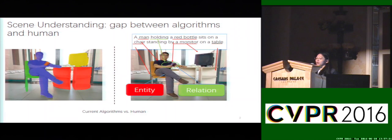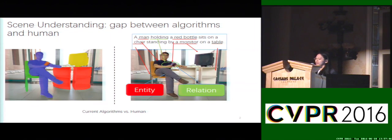First, there is a huge gap between existing computer vision algorithms and human beings in understanding a scene. Currently, state-of-the-art algorithms can predict a piecewise semantic labeling for a scene with high accuracy. However, people usually understand a scene using structured configurations. This configuration often includes the main entities of the scene and their relations, such as described in sentences. For example, man and chair are entities, and holding and standing are relations.